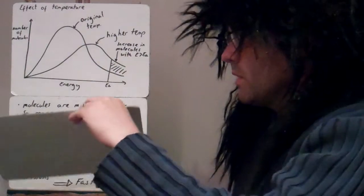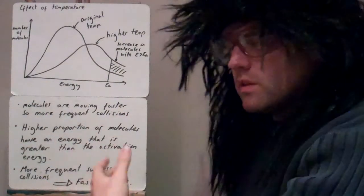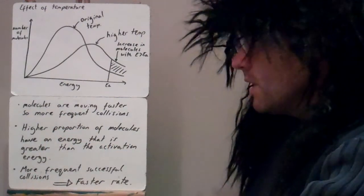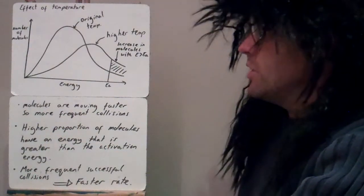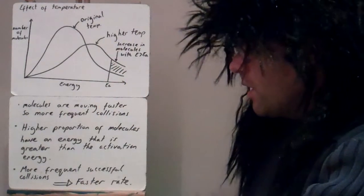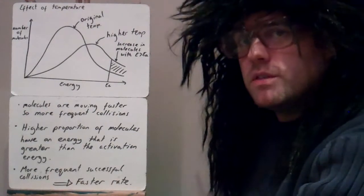So what effect does that have? So molecules are moving faster, so there's more frequent collisions. So let's go back to your collision theory. High proportion of molecules have an energy that is greater than the activation energy. That's what's represented by this area of the graph here. Because of this, there's more frequent successful collisions, so there's a faster rate of reaction.